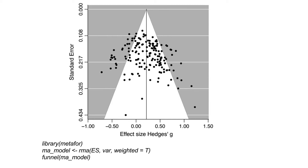If all results are published, studies will deviate from the population mean in either direction. But if a field of research systematically ignores a certain direction, the plot can be asymmetrical. Note that there can also be other reasons for a plot to be asymmetrical. As you can see from the plot, most points are inside the white area, suggesting there is not a high degree of bias in the data.